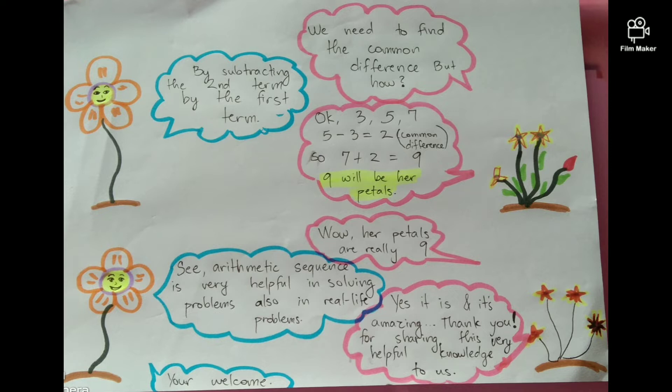3, 5, 7. 5 minus 3 equals to 2. Common Difference. So, 7 plus 2 equals to 9.